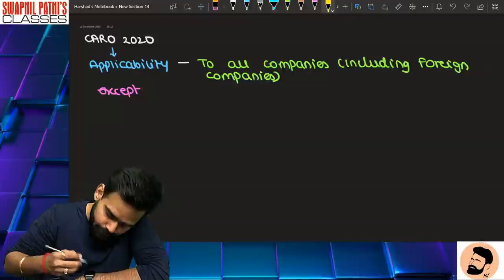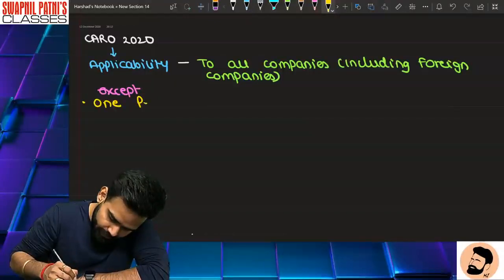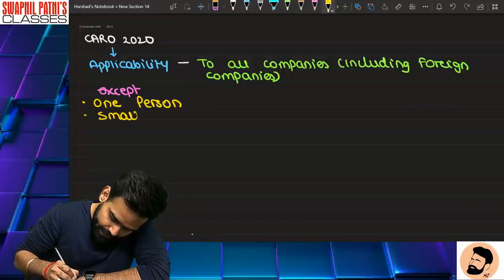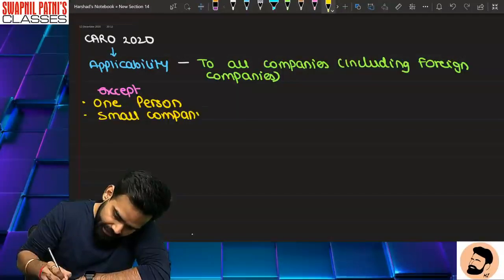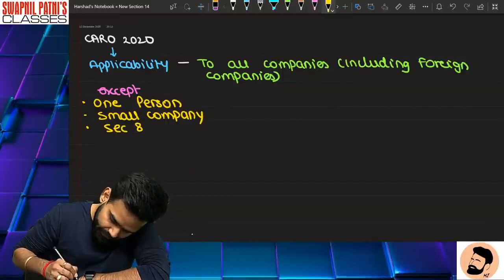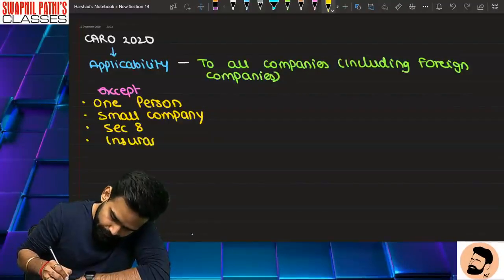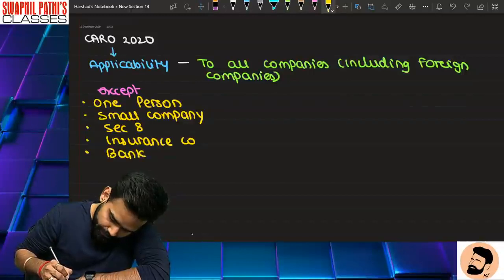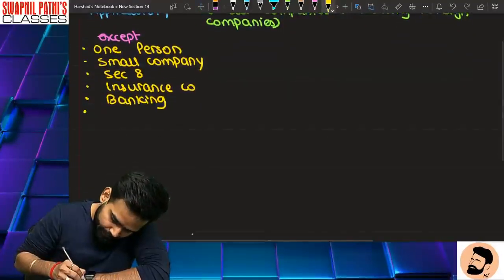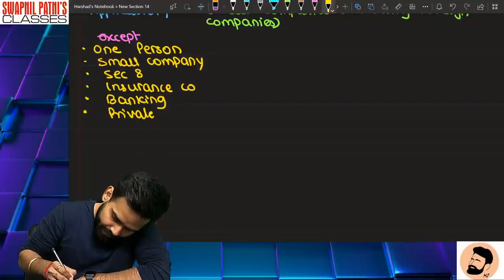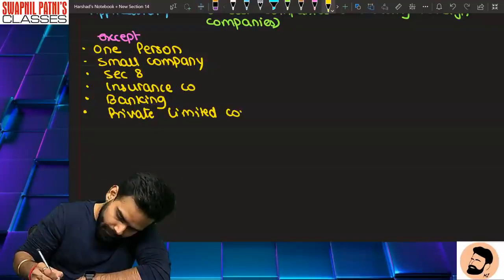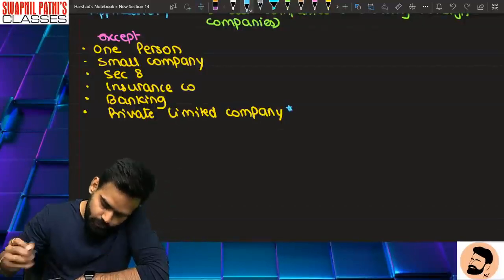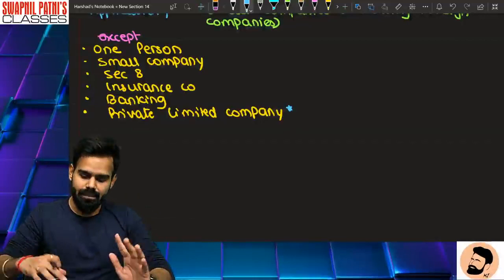Except में क्या क्या आएगा - memory technique: one person got his Samsung S8 insured from a private bank. Star mark लगाया था Private Limited Company पे। So अब private limited company के लिए हम लोग को discussion करना है।